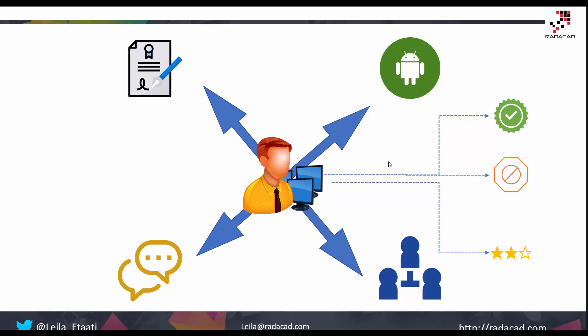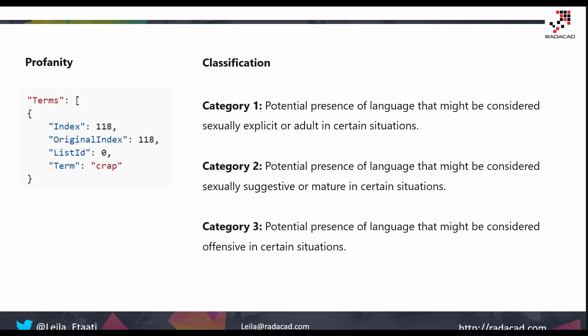These are texts that are sometimes against the community guidelines, or they disclose information like phone numbers or email addresses. You may also want to specify the location of specific words. This API is able to find the location of the words or terms you want to locate in the text — it can identify the exact position.